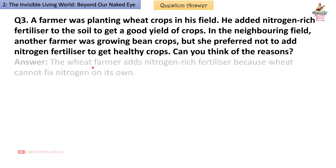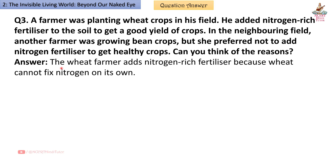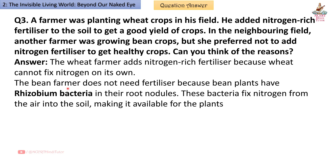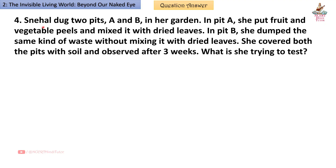Answer: The wheat farmer adds nitrogen-rich fertilizer because wheat cannot fix nitrogen on its own. The bean farmer does not need fertilizer because bean plants have Rhizobium bacteria in their root nodules — these bacteria fix nitrogen from the air into the soil, making it available for the plants.